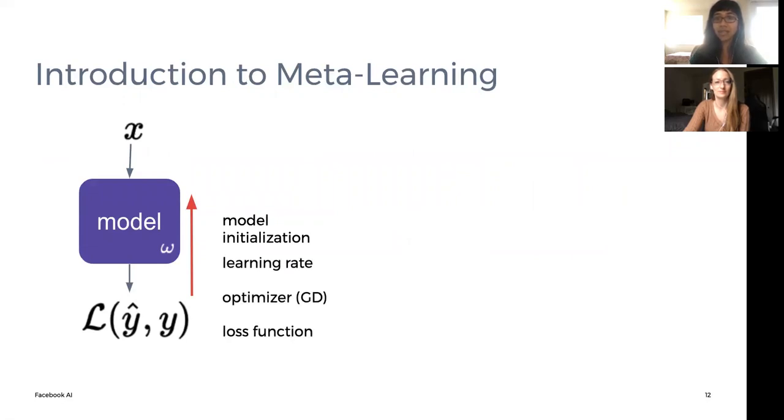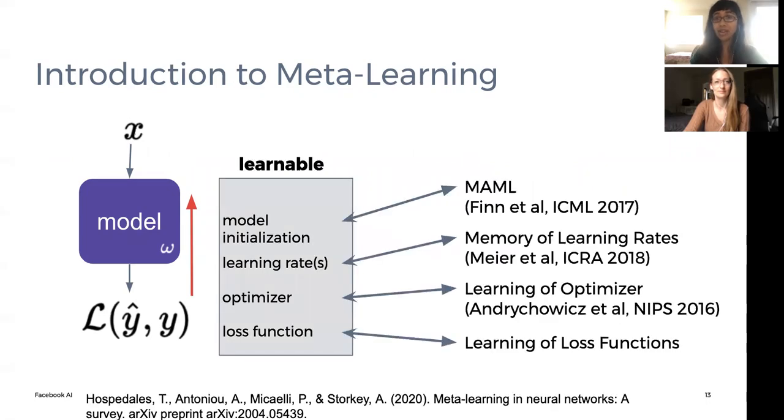Typically, these quantities are called hyperparameters and are fixed. In meta-learning, all these quantities can be learnable. We particularly focus on learning the loss function.